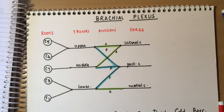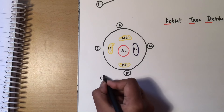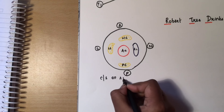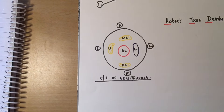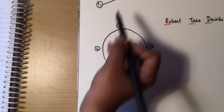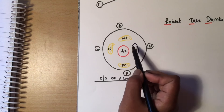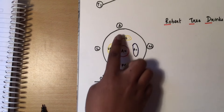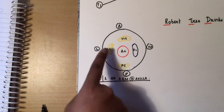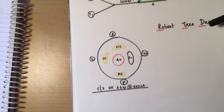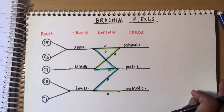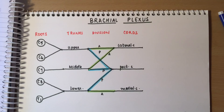Here's the cut section of the arm at the axilla. The cords are only visible in the axilla — the divisions are above the axilla. The medial cord is present medial to the axillary artery, the lateral cord is present lateral to the axillary artery, and the posterior cord is present posterior to the axillary artery. This is why the cords are named as they are.